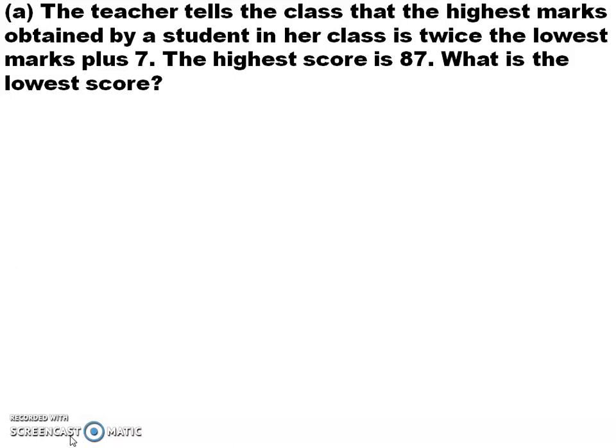The highest marks obtained by a student in her class is twice the lowest marks plus 7. The highest score is 87. What is the lowest score? What is the unknown quantity here? After reading the question, did you understand what is the unknown topic here? The unknown quantity is the lowest score.